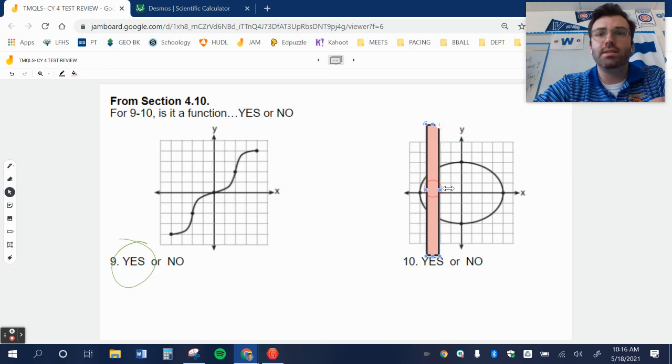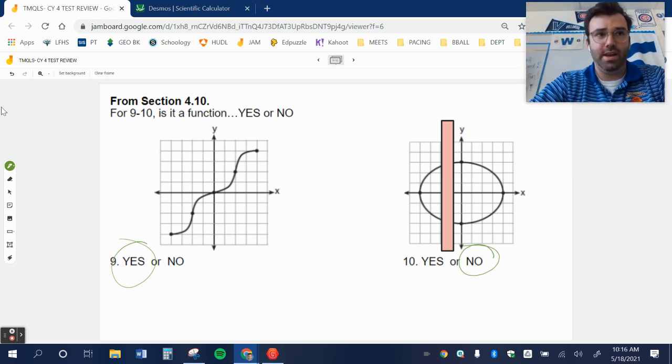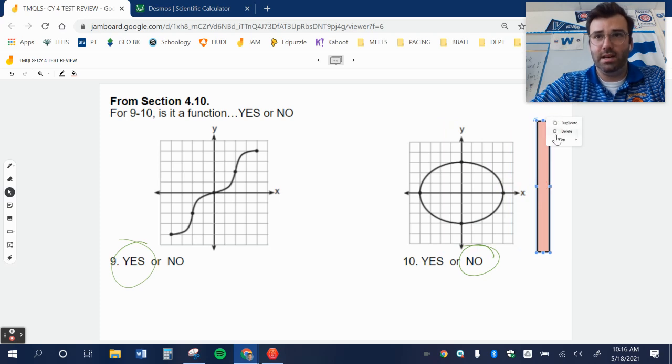Number ten should be pretty easy to see. Right away, my graph hits my vertical line twice. So no, that is not a function. Since the graph hits the vertical line twice, it is not a function.